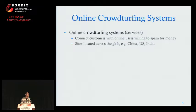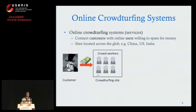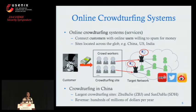There are crowd-turfing websites all over the world, and here's how it typically works. A customer — a company or a politician who wants to promote themselves — pays for the campaign, goes to the crowd-turfing website, and finds workers. The workers control their accounts in different online services and perform the required tasks. Particularly in China, we found two of the largest crowd-turfing sites called ZBG and SDH, and our initial measurement found they already have hundreds of millions of dollars in industry revenue per year.